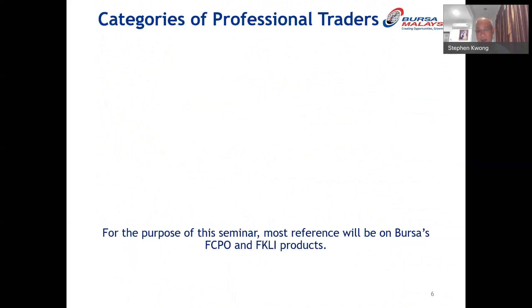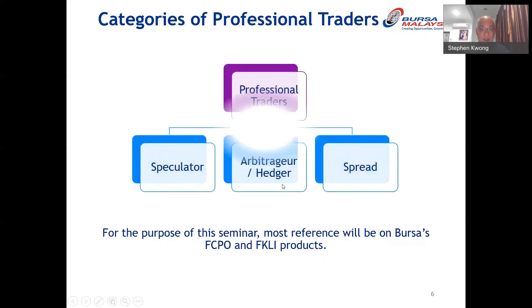Without further ado, let's go to the first topic: three categories of professional traders. For the purpose of this seminar, the reference will mainly be on Bursa Malaysia products, specifically the FCPO — the crude palm oil futures — and the KLCI, which is the Kuala Lumpur Composite Index futures. The three main categories are: speculator, arbitrageur or hedger, and spread trader.